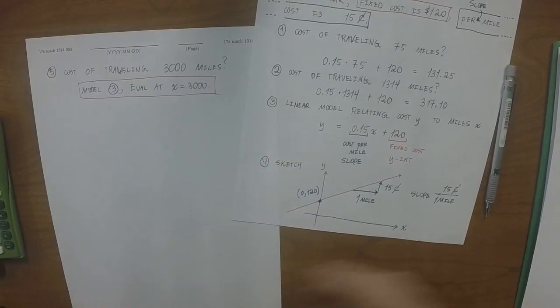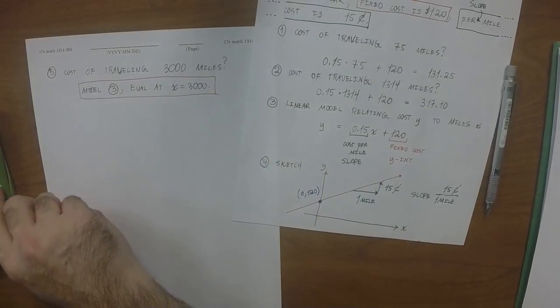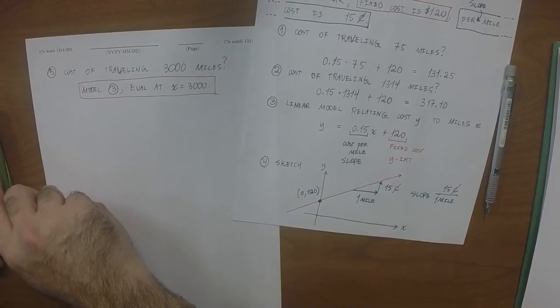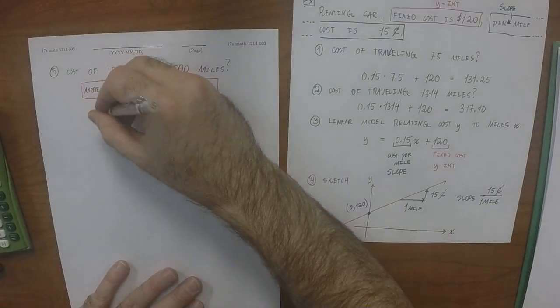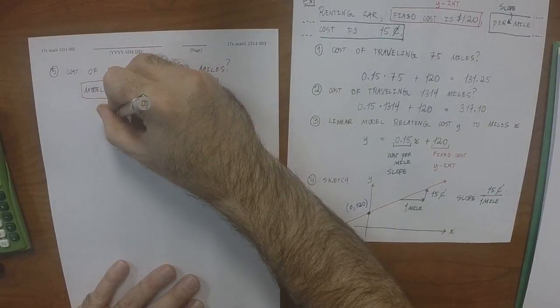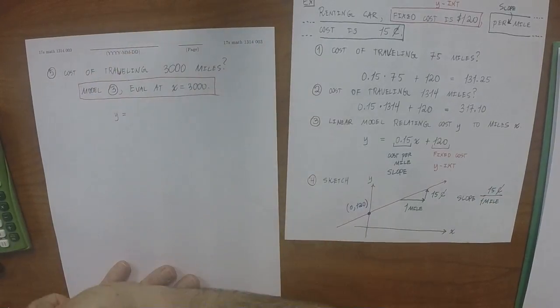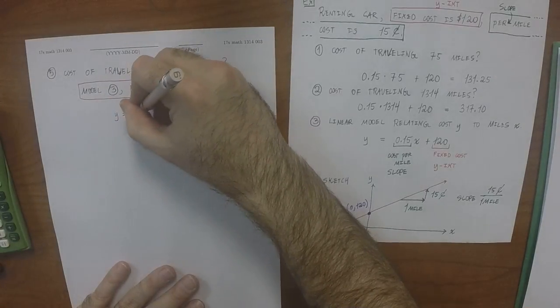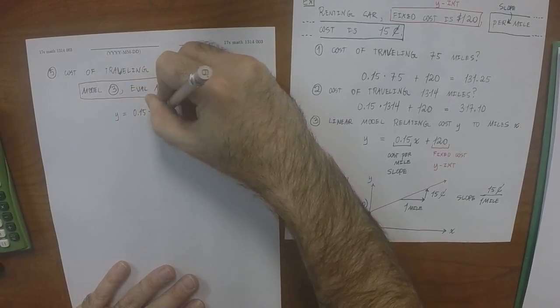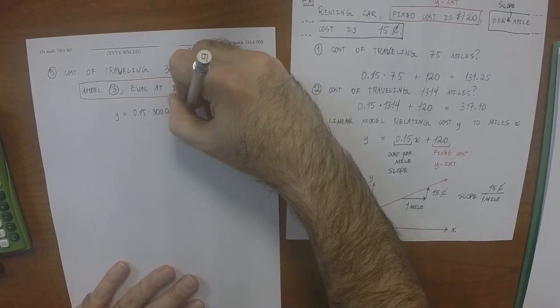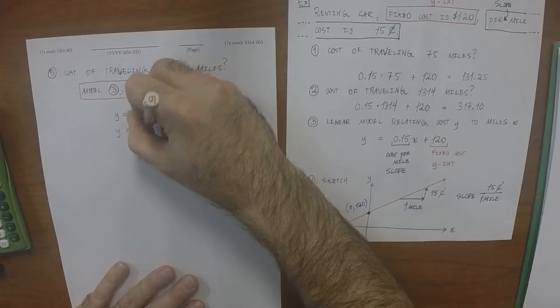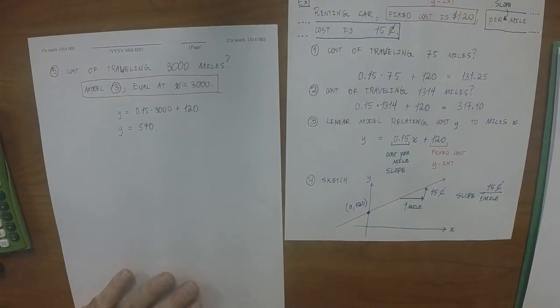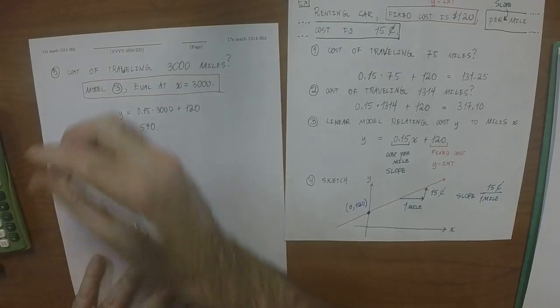Okay, so doing that, I get 570. So that would be y is 0.15 multiplied by 3,000 plus 120. So y is 570. And what does that number mean in the context of this exercise? Total cost.